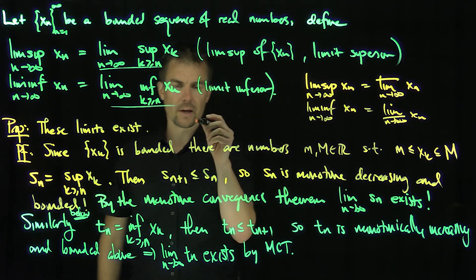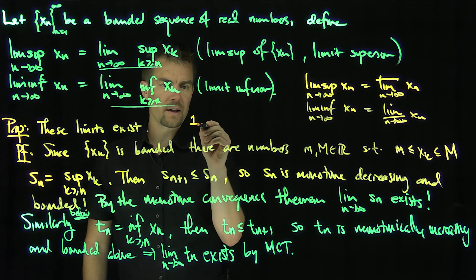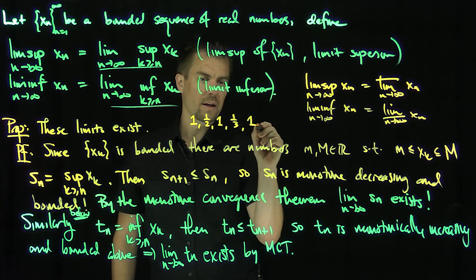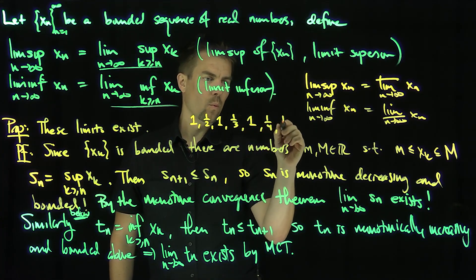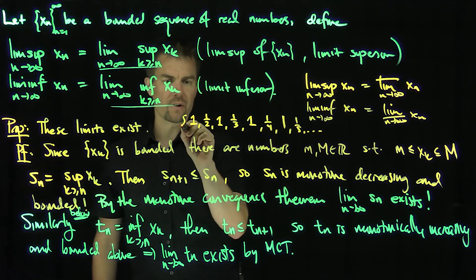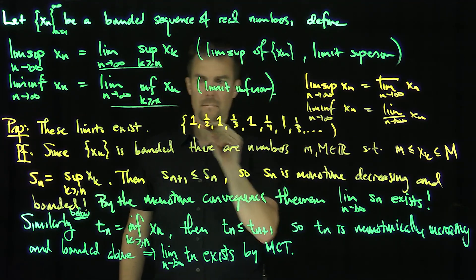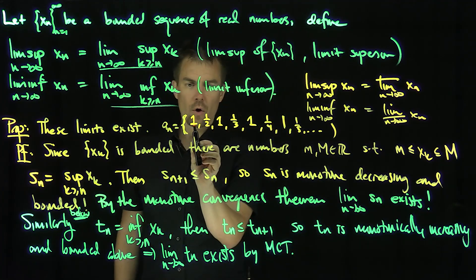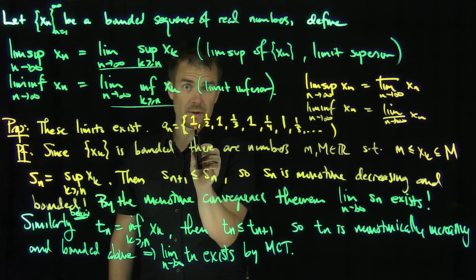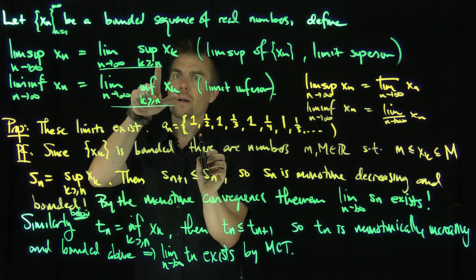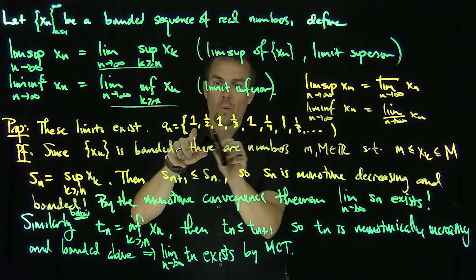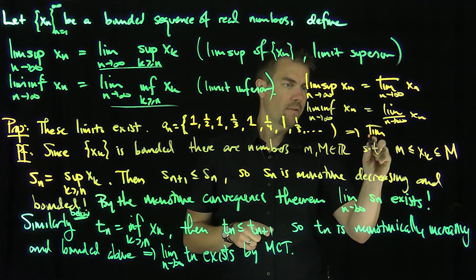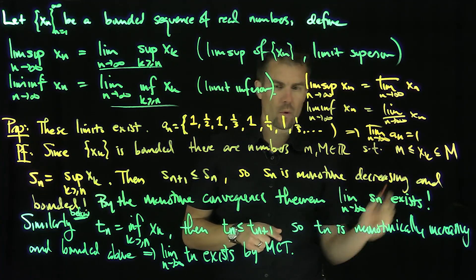If we look at the sequence: 1, 1/2, 1, 1/3, 1, 1/4, 1, 1/5, and so on — call this sequence an — then the lim-sup is easy to find. If I look at the supremum of all xk where k is greater than or equal to a fixed level, the supremum is always going to be 1, because every odd-indexed term is 1. So the lim-sup of an is equal to 1.